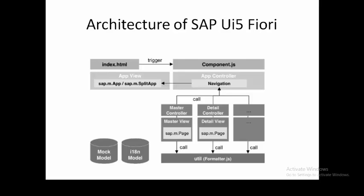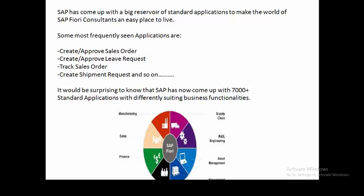These are in turn dependent on sap.m.app and sap.m.splitapp. It is essentially an up-and-down process: the moment index.html is triggered, we get data from the call, which flows into the application controller. Once data is in the application controller, it is displayed in the application view through sap.m.app. It is as simple as that.